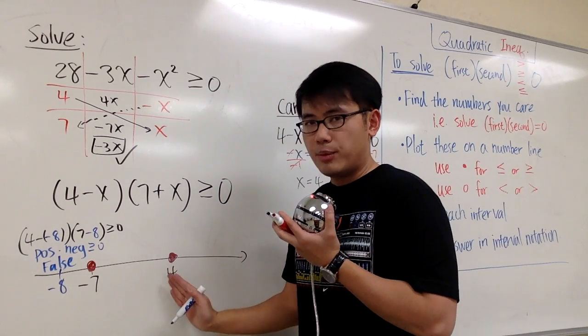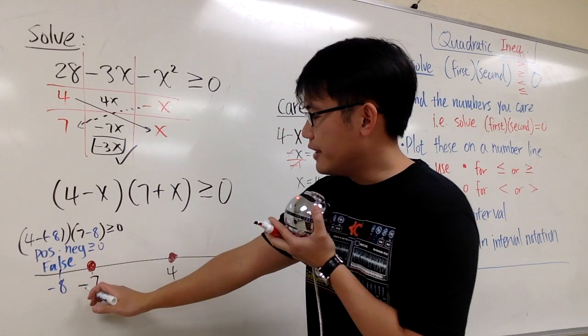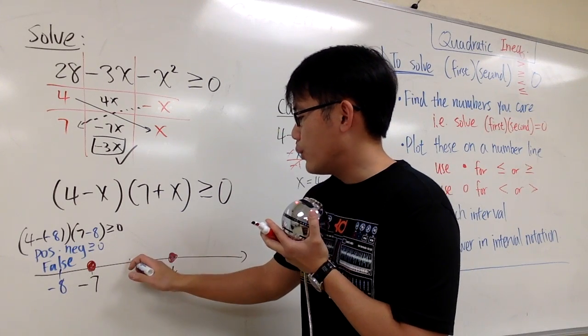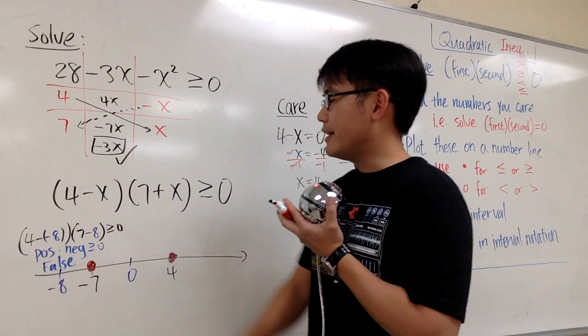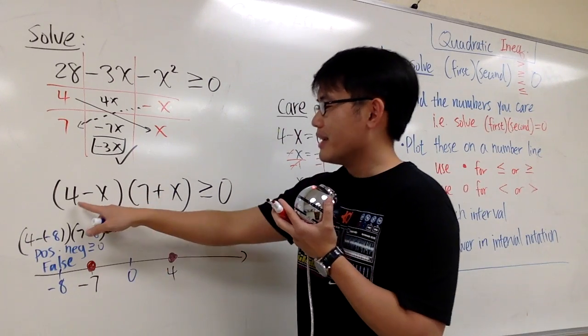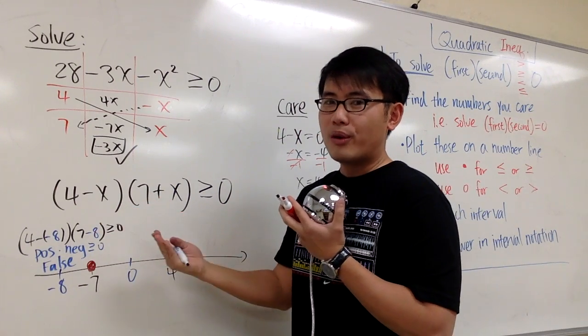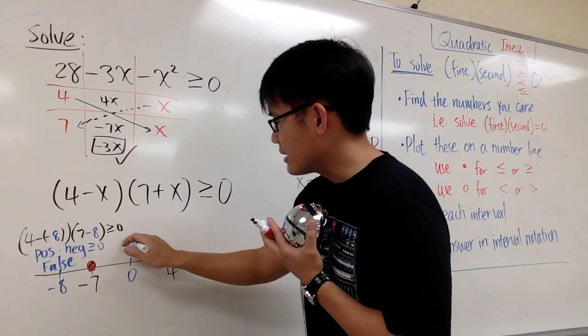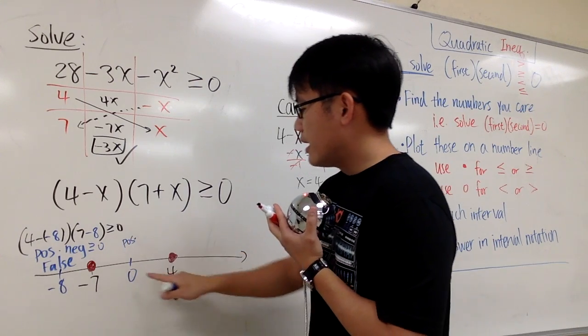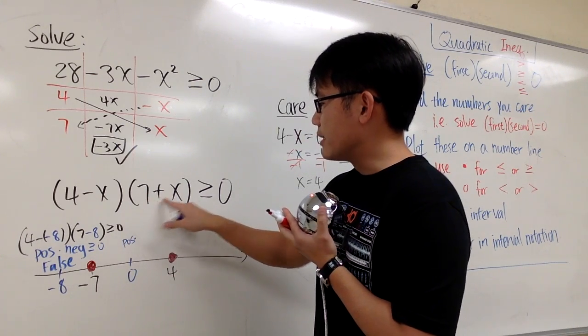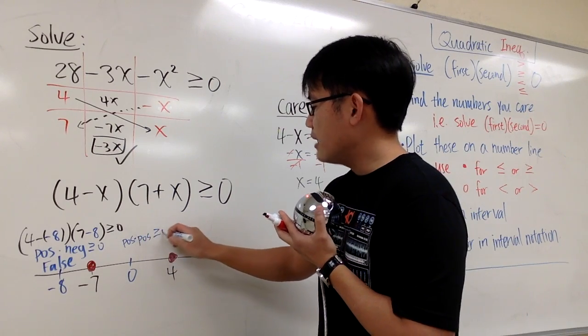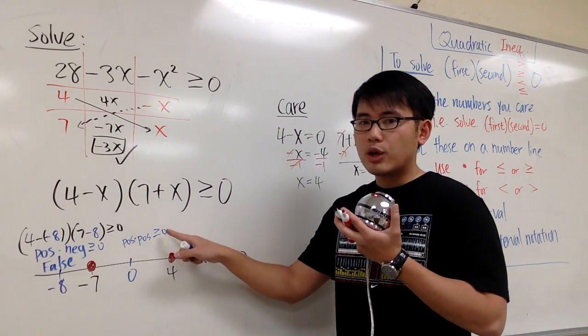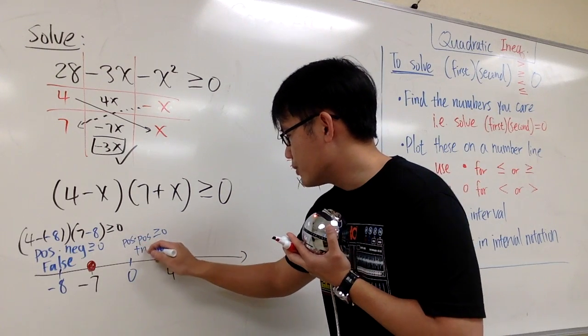And now we have to check the middle portion. Pick a number between negative 7 and 4. I will just choose 0. And I will plug in 0 into this x. Because 4 minus 0 is 4, positive 4. Plug in 0 into here: 7 plus 0, which is 7, positive 7. Positive times positive. Do we get greater than or equal to 0? Yes, we do. So this right here is true.